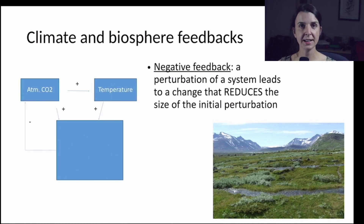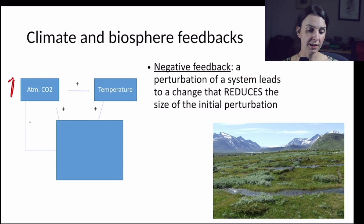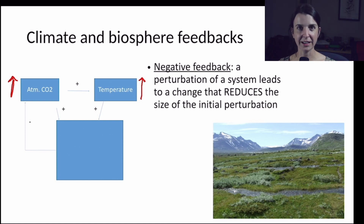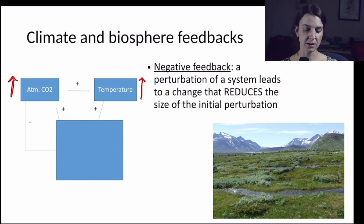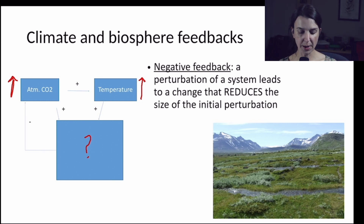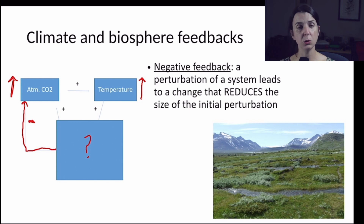So what does that mean? Let's take climate as an example in the tundra. We are currently increasing the CO2 levels in the atmosphere, and as CO2 is a greenhouse gas, this is increasing the temperature of the planet, including in systems like the tundra. The question is, in terms of a negative feedback, what process could be influenced by either increased CO2 or increased temperature that would tend to lead to a reduction in atmospheric CO2 and temperature?